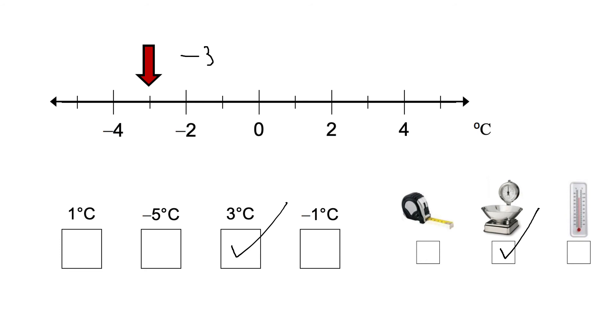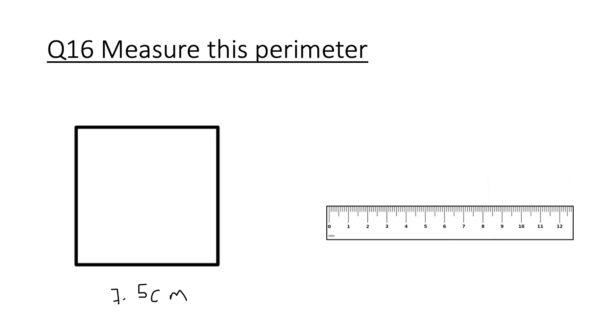Question 16, measure the perimeter of this shape or of this square. Each length is 7.5. This length is also 7.5 because the thing about a square is it has all the same length: 7.5 and 7.5 again.